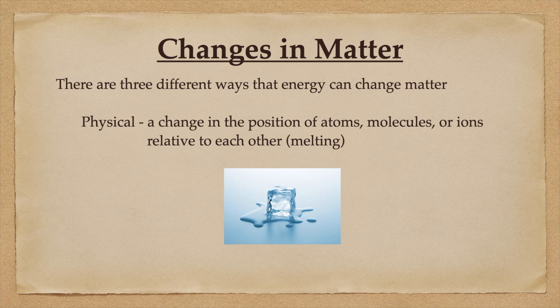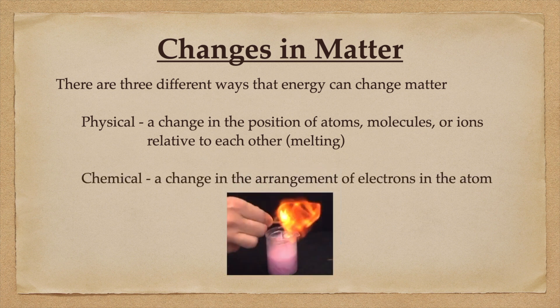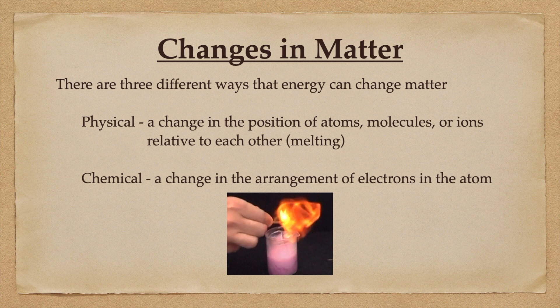A chemical change involves the change in the arrangement of electrons in an atom or in a molecule. A chemical change could be cooking a steak or burning a candle.